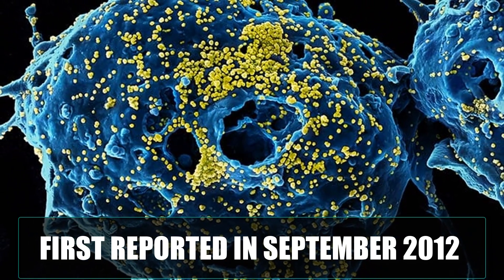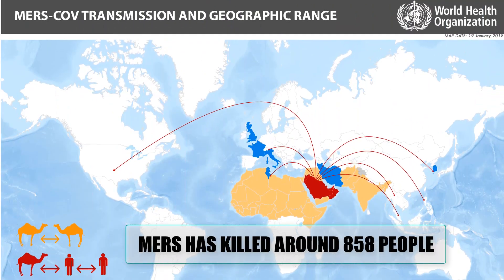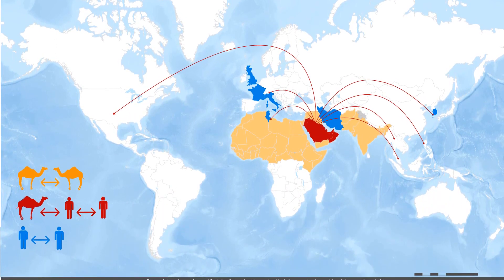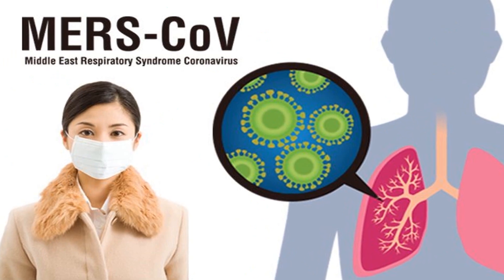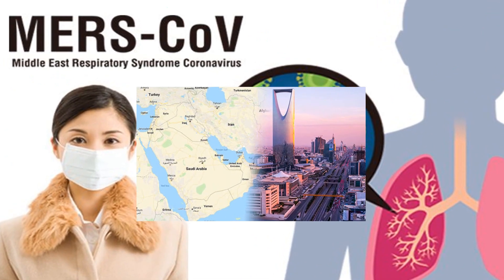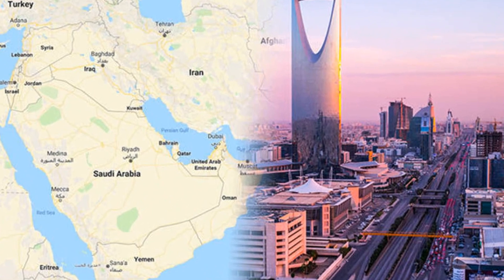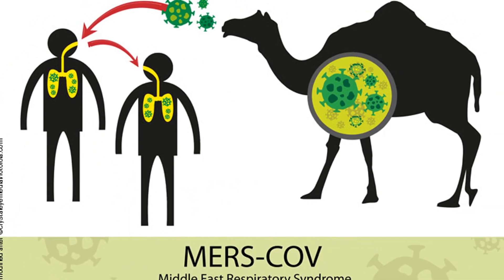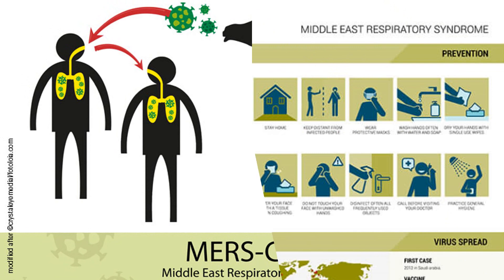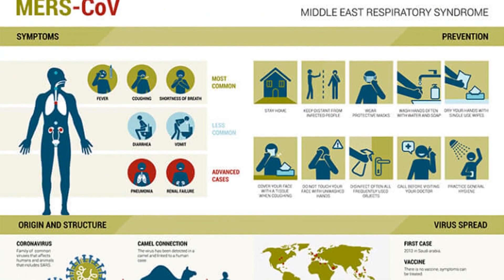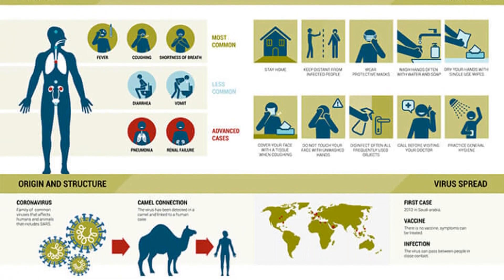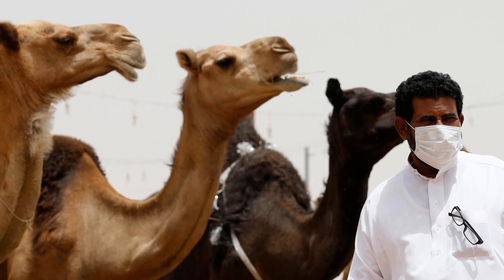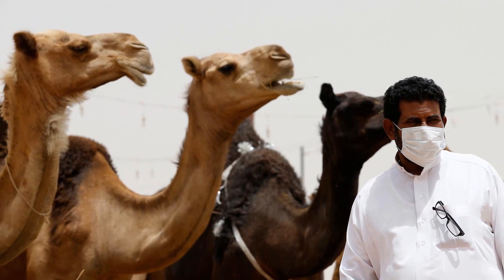Middle Eastern Respiratory Syndrome (MERS). First reported in September 2012, MERS has killed approximately 858 people. In 2012, a novel coronavirus not previously seen in humans was detected for the first time in a patient in Saudi Arabia. The coronavirus, now known as MERS, was said to have first originated in camels. Thankfully, the WHO has pointed out that improved infection prevention and efforts to reduce human-to-human transmission have worked, greatly lowering the number of deaths from MERS since 2016.